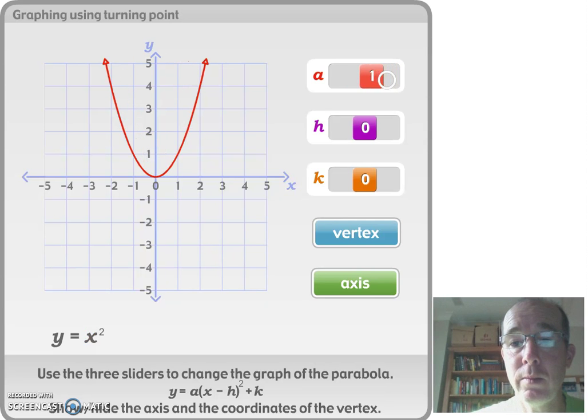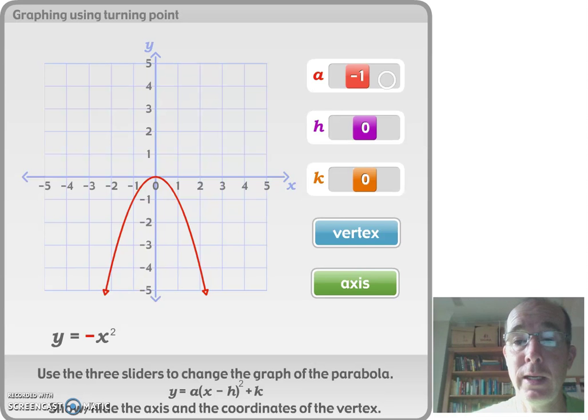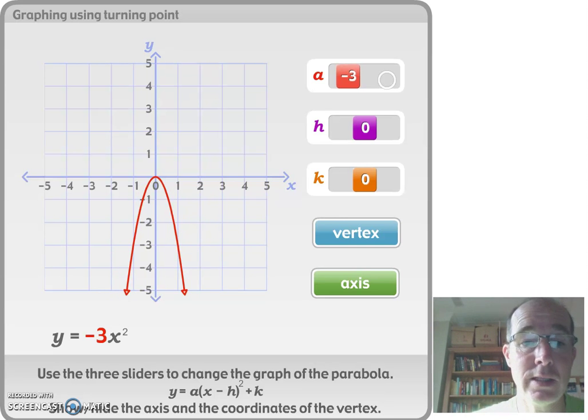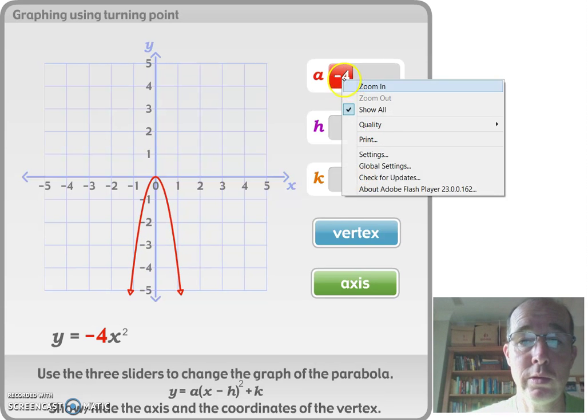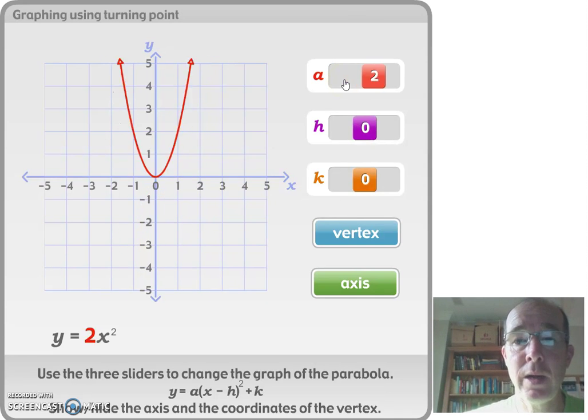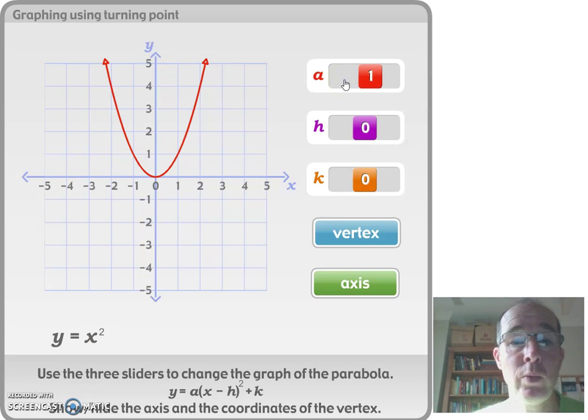If we take that and move it back to the left, you'll see as we go to a negative, we go from what's been a happy graph, a smiley face if you like, into a sad graph. So here again, making that value smaller and smaller, we actually make it a skinnier graph.